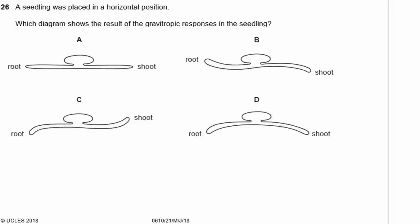Question 26: A seedling was placed in a horizontal position. Which diagram shows the result of the gravitropic response? The roots go down and the shoots go up. The answer is C.